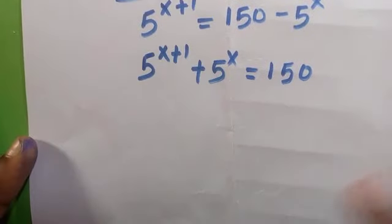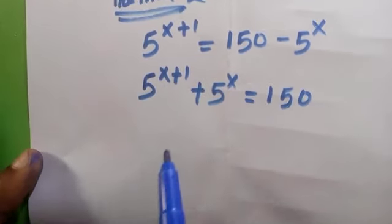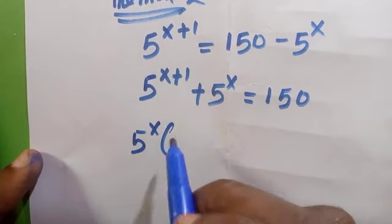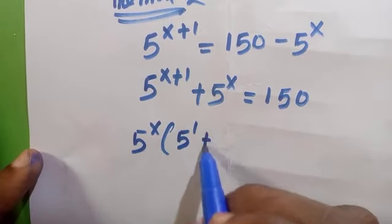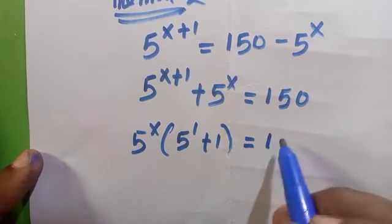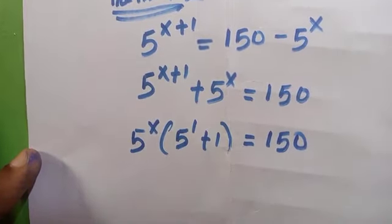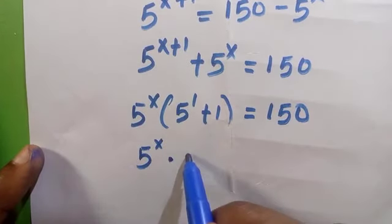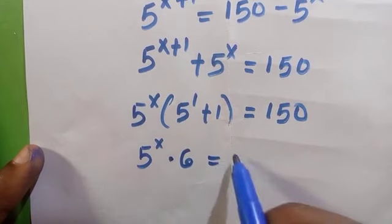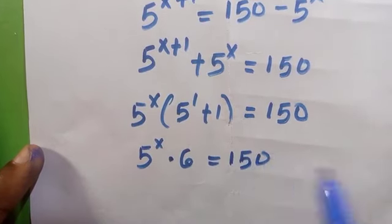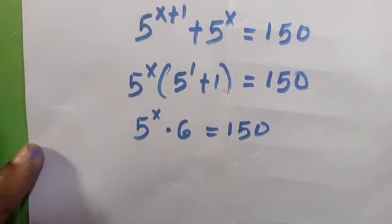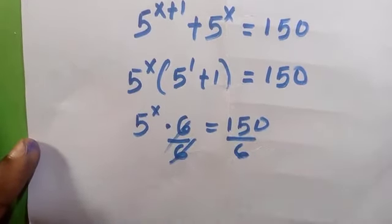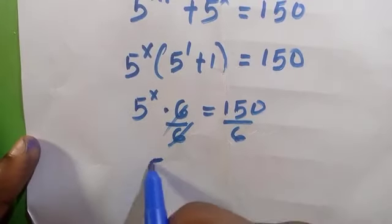So from here let's say I take out 5^x from this and we are going to have 5^x in brackets. So for the first one when we take out 5^x it remains 5^1, while the second one remains 1, equals 150. So when we add the parenthesis values together we have it as 6 equals 150. And by dividing both sides by 6, we are going to get 5^x.